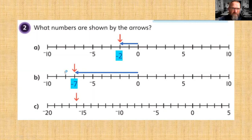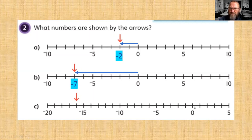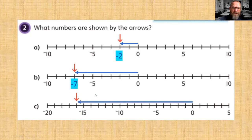Now where's that zero? You see — it's moved. If we hadn't checked for zero, we might have said minus seven again. It's important to check for that zero. Now counting back in jumps of five: minus five, minus ten, minus fifteen — and one more — that is going to be minus sixteen.